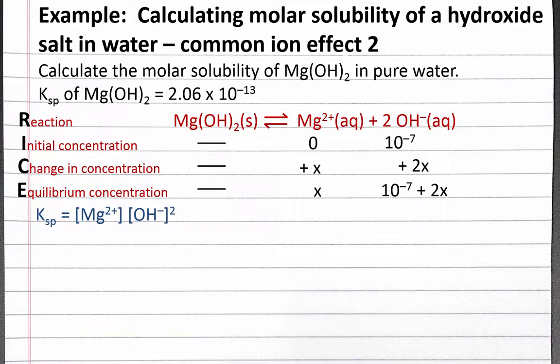We can substitute the Ksp value given in the problem, 2.06 times 10 to the negative 13, as well as the equilibrium concentration row of our RICE table into our Ksp expression.